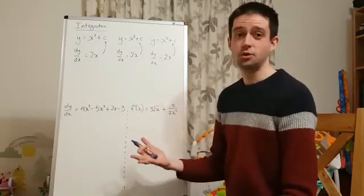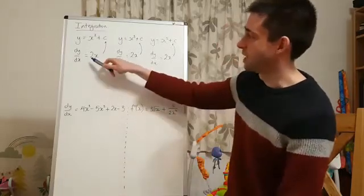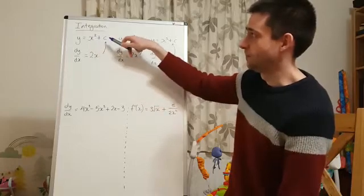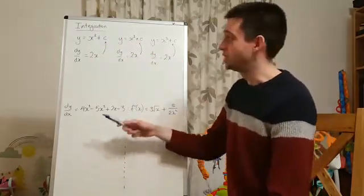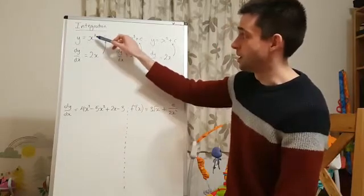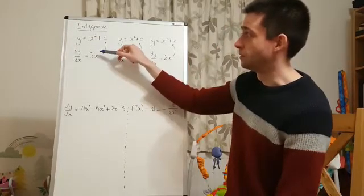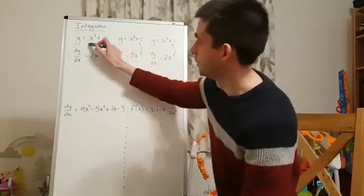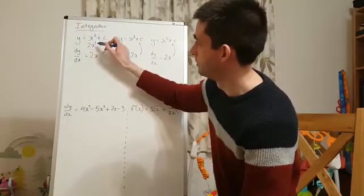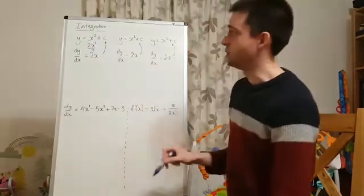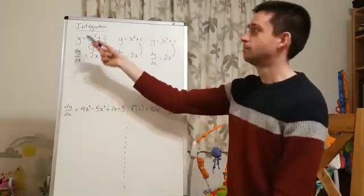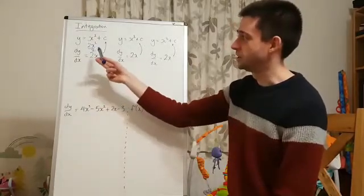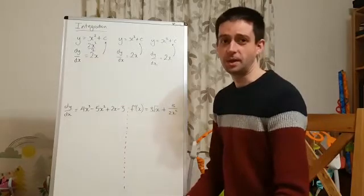For now, though, let's talk about what we've actually done to go from dy dx equals 2x to y equals x squared plus c. Well, if you think about how we differentiated this, we multiplied by the power and we subtracted 1 from the power. So what we're going to do to integrate is the opposite of that. We're going to add 1 to the power and we're going to divide by the new power. So 2x squared over 2 simplifies to x squared. So if we start with dy dx equals 2x, it integrates to y equals x squared plus c.